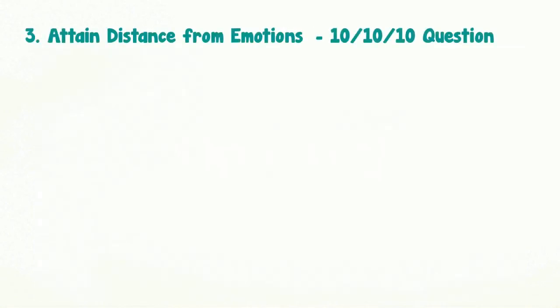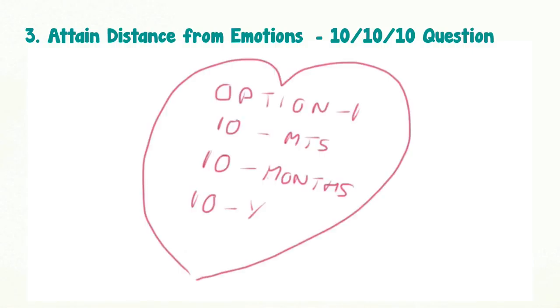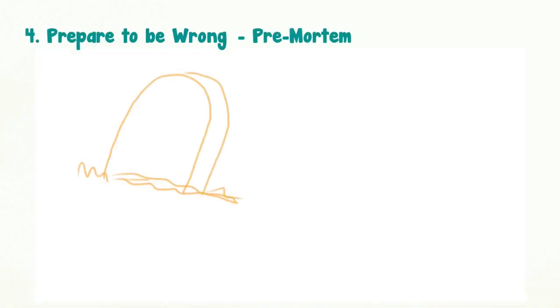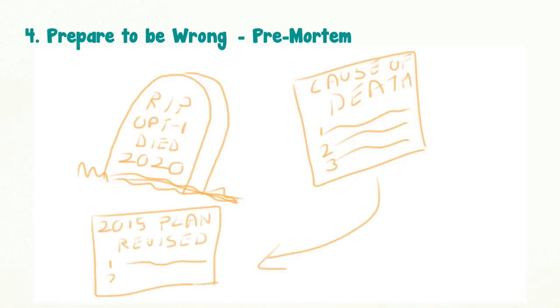To attain distance from short term emotion, ask yourself the 10-10-10 time shift question: how will this decision feel in 10 minutes, 10 months and 10 years from now? In preparing to be wrong, you can apply the premortem technique. Imagine the future death of your idea or project and then ask yourself, why did it fail? Think of all conceivable reasons that could lead to failure. You can then adapt your plans to deal with the potential negative scenarios better.